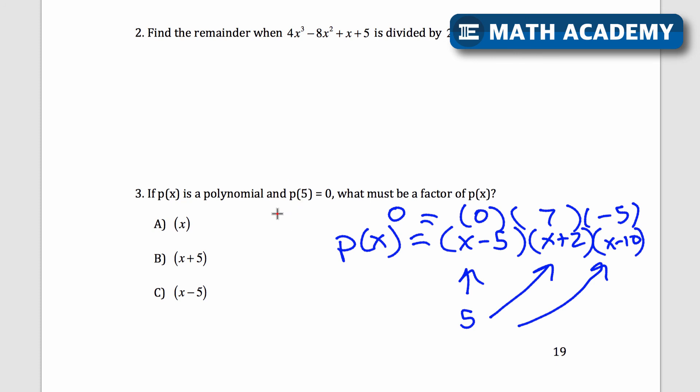So this idea comes up often on the SAT practice test, or not just the practice test, but the actual SAT. The idea that what is a factor? Well, I know a factor when I have an input, when I have a certain input for x and I get out 0. That means x minus that input would be a factor. So it looks like c would be the answer there.